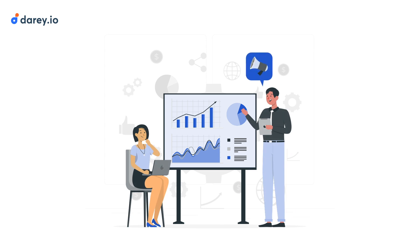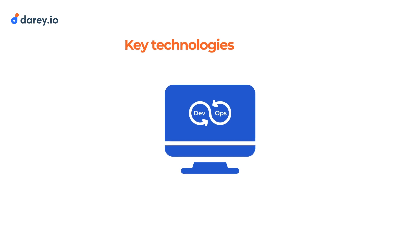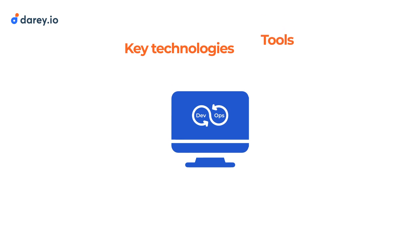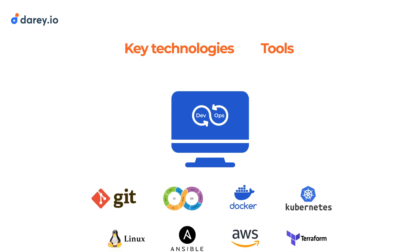At this point, you must know the tools that will make you successful. So we'll cover the key technologies and tools used in DevOps, such as Git, continuous integration and delivery, containerization with Docker and Kubernetes, and more.